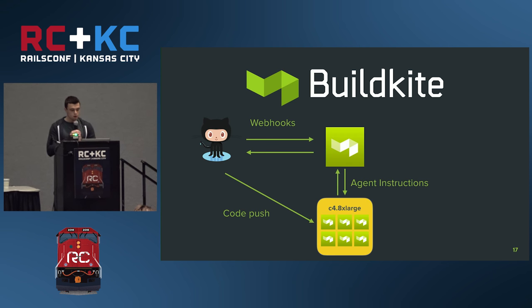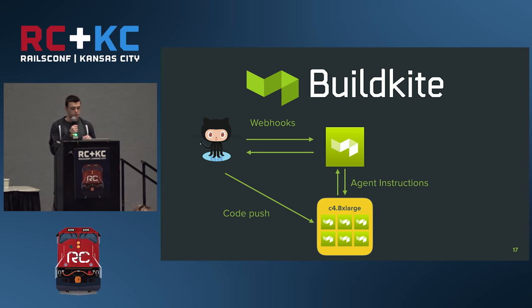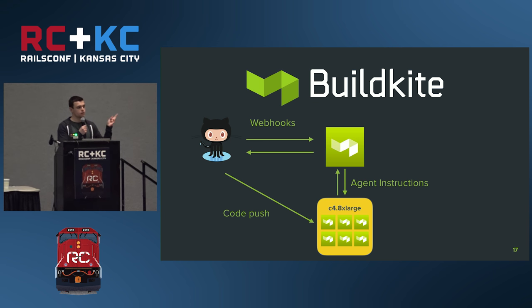The way Buildkite works is you run Buildkite agents on your own machines. Those agents talk back to Buildkite, which also ties into events for your repo. When you push code to GitHub, Buildkite knows it needs to start a build. You tell Buildkite what scripts you want the agents to run; they pull the code from GitHub, run the scripts, and propagate the results back to Buildkite, which sends them wherever they need to go.